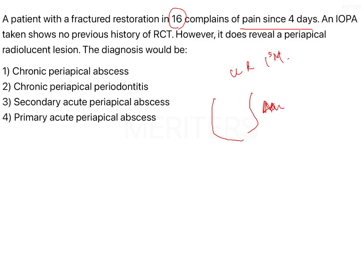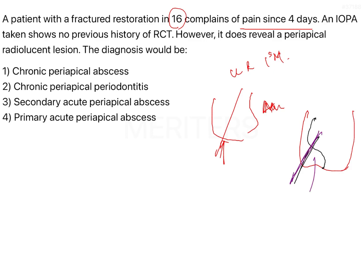What has happened is the patient probably bit onto a very hard substance, and because of the high biting force, the restoration fractured. So if this is the tooth and this is the restoration, the patient could have bitten into something hard, causing a fracture along a plane where part of the restoration has come out while the rest remains in place.